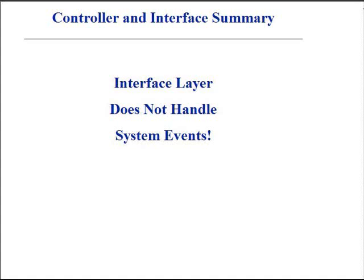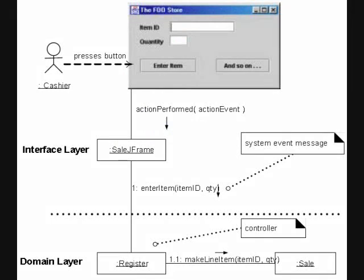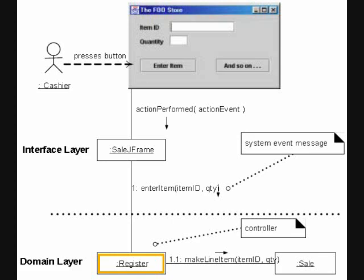Interface objects, for example window objects and the interface layer, should not have responsibility for handling system events. To demonstrate, consider a design that uses a J-frame to display the information. Assume the point-of-sale application has a window that displays the sale information and also captures cashier operations. Using the controller object, we can come up with an acceptable relationship between the J-frame and its controller, as well as other objects. Notice that the sale J-frame class is part of the interface layer.